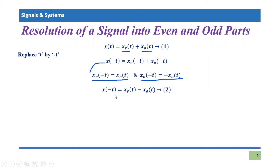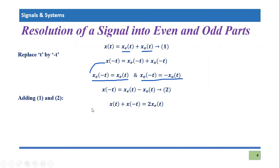and equation two, which is for the time reversal signal. For the evaluation of even and odd parts, we need to add them up. So adding equations one and two, x(t) + x(-t) will be added. This gives us, on the right side,